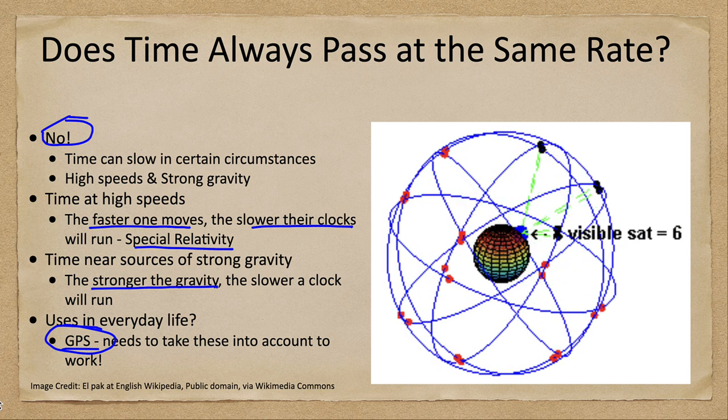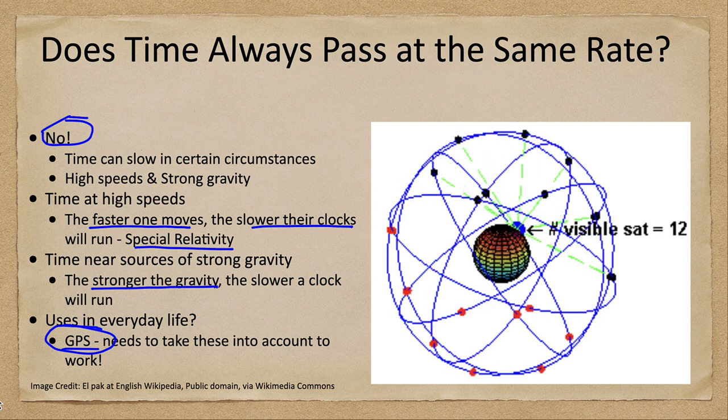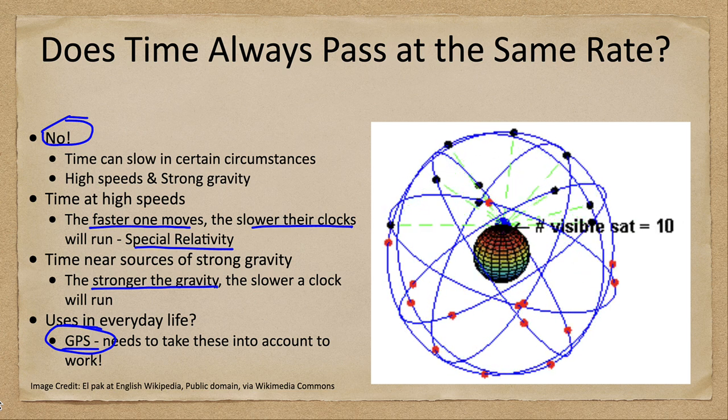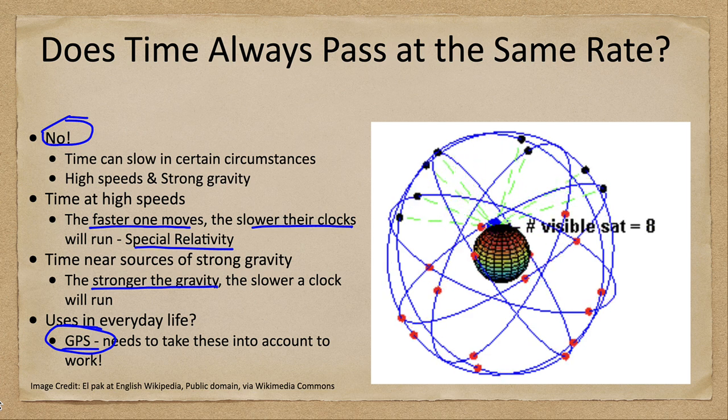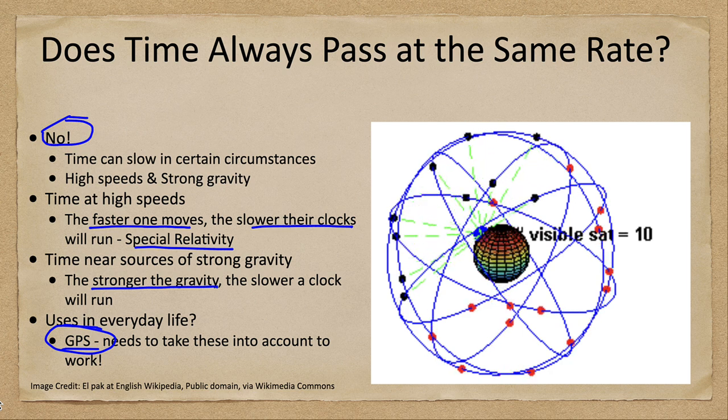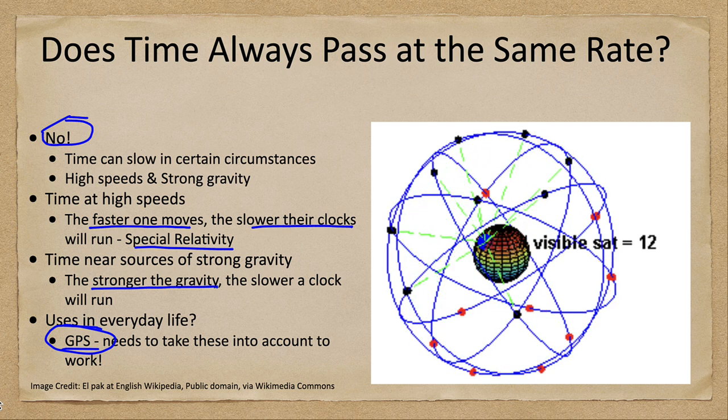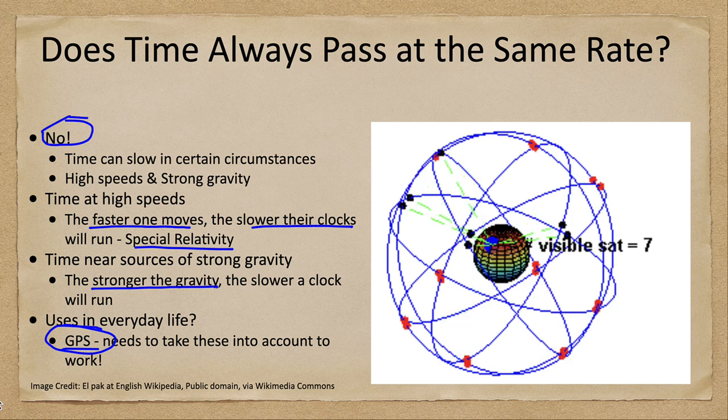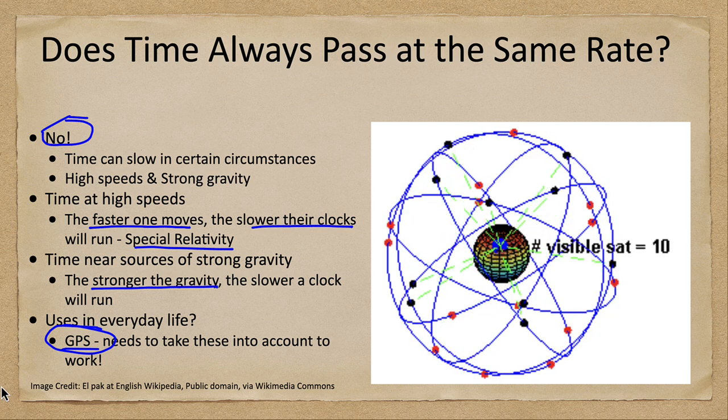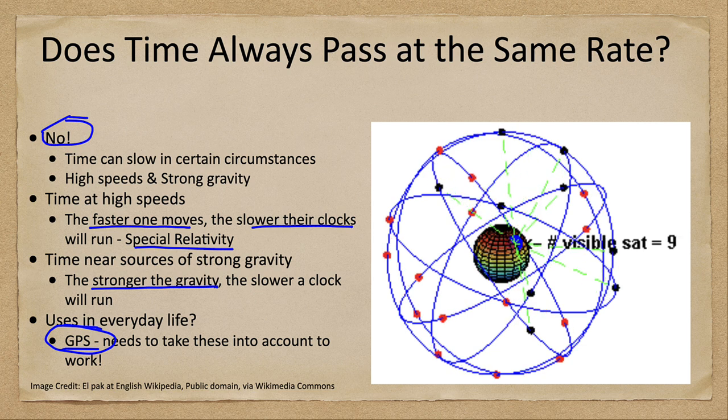But remember, they're moving—that causes their clocks to slow down. They are farther away from Earth, meaning that their clocks will speed up. And between those two things, we have to take that into account when calculating GPS positions in order for things to work accurately. So that's one example where relativity applies in everyday life.